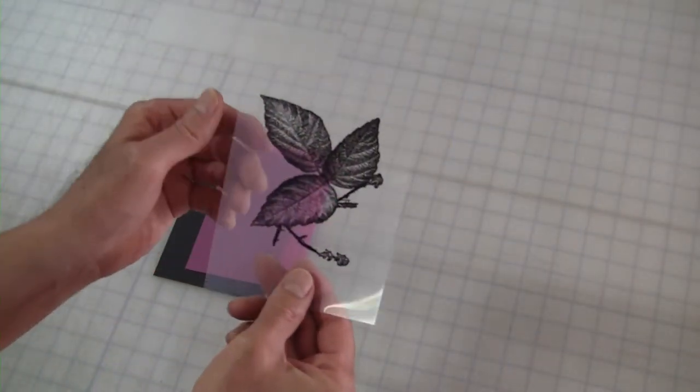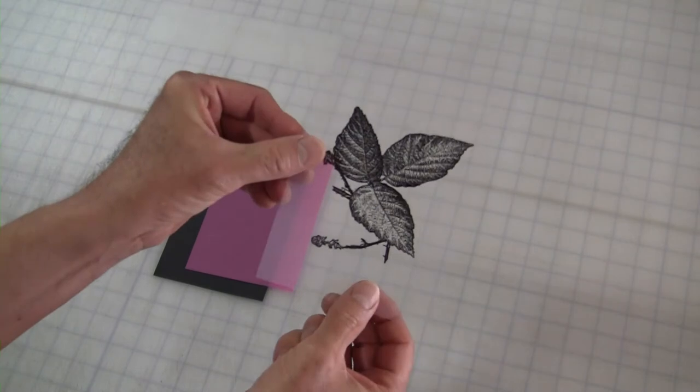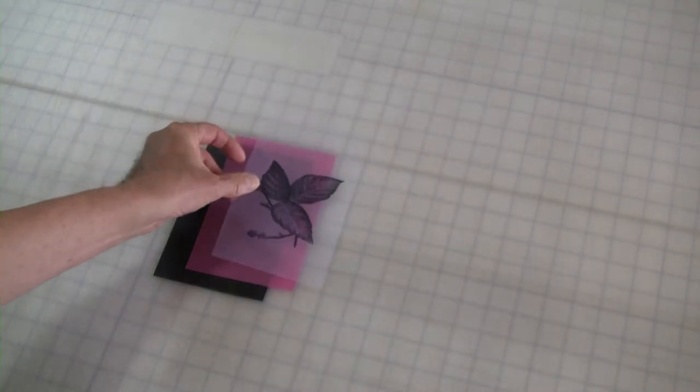First step is to print your black and white image on transparency. It should fit within the boundaries of a 4 by 6 inch rectangle.